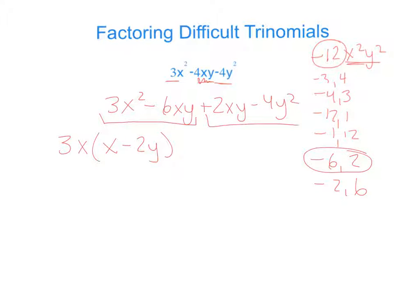Then we say, out of these two, what do we have in common? Well, we have a positive 2 and a y. We are left with x minus 2y.